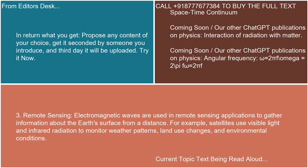3. Remote Sensing: Electromagnetic waves are used in remote sensing applications to gather information about the Earth's surface from a distance. For example, satellites use visible light and infrared radiation to monitor weather patterns, land use changes, and environmental conditions.